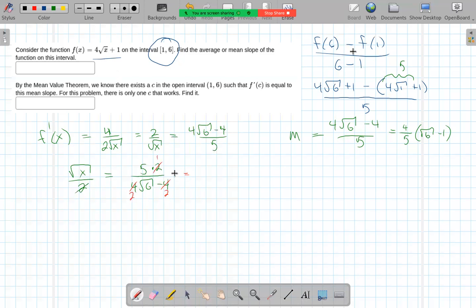So we get the square root of x is equal to 5 over twice the square root of 6 minus 2.